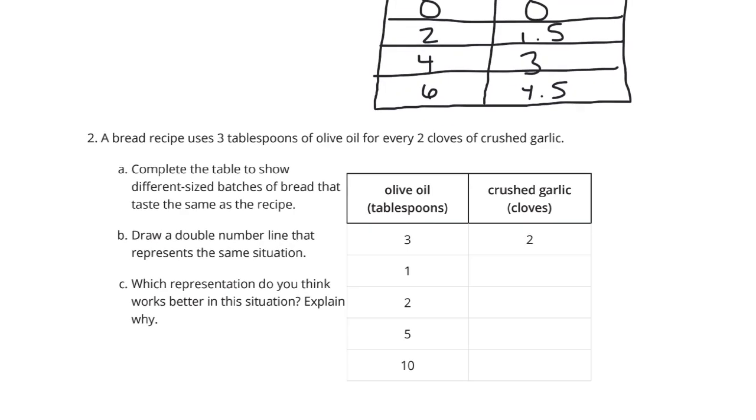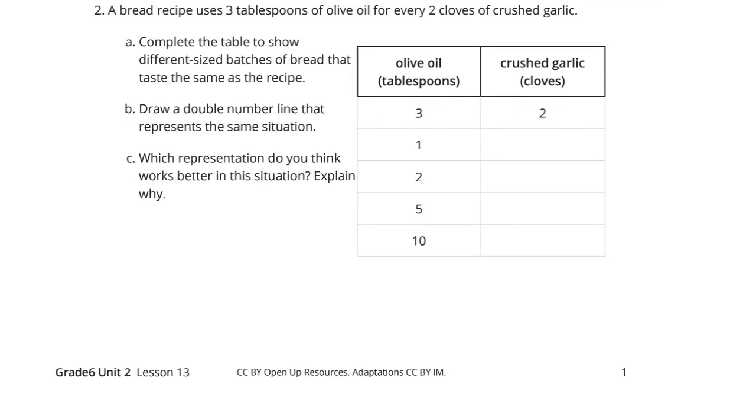Question 2. A bread recipe uses 3 tablespoons of olive oil for every 2 cloves of crushed garlic. Complete the table to show different sized batches of bread that taste the same as the recipe. All right.